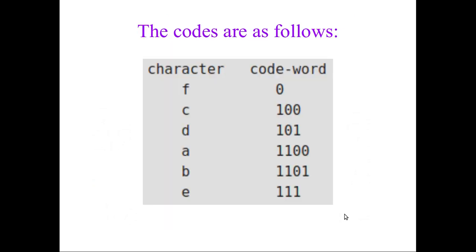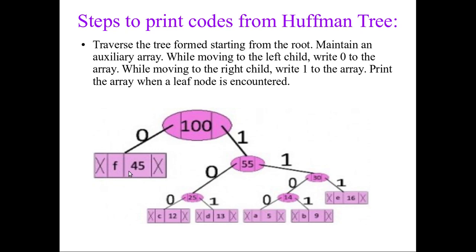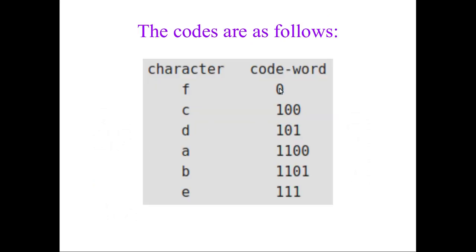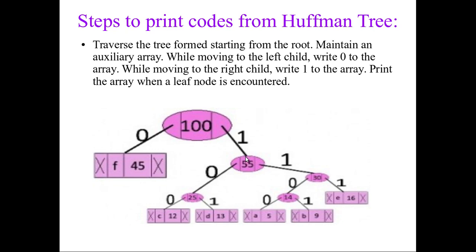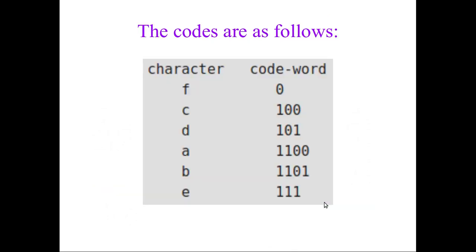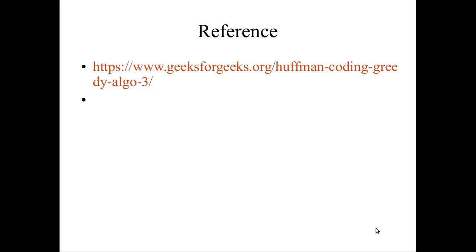Looking at character f, the code word is 0. For c it is 1, 0, 0 — you have to travel till the leaf node to get the code word. For d it is 1, 0, 1. For a it is 1, 1, 0, 0. For b it is 1, 1, 0, 1. And the remaining character gets 1, 1, 1. That's how you design the Huffman tree in Huffman coding. I hope you understand what Huffman coding and the Huffman tree are. See you in the next video, thank you.